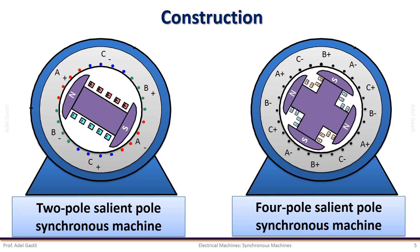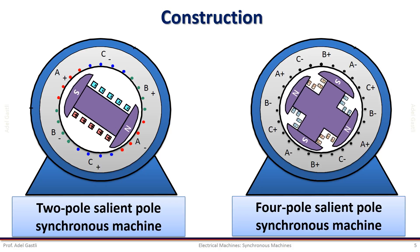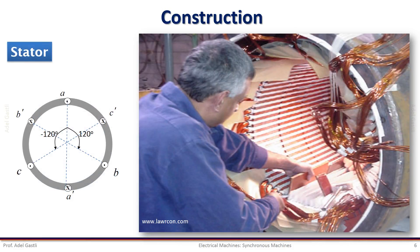More details about each component of the synchronous machine will be covered in the next slides. The stator of a synchronous machine is identical to that of an induction machine, where three-phase windings are placed in slots cut on the inner surface of the stator. The ends of these windings can be connected in star or delta to form a three-phase connection. These windings are fed from a three-phase AC power supply. The stator is known as the armature.